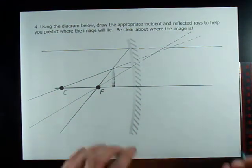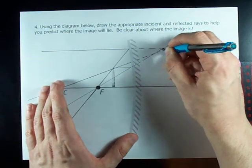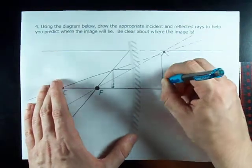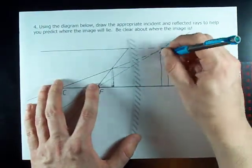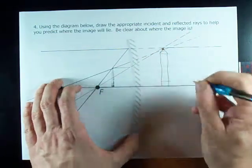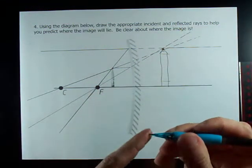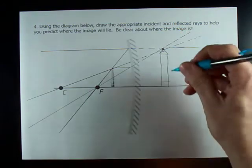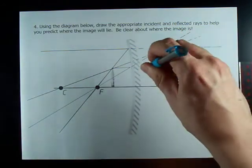Where do all three of my rays meet? The answer is right here. Tip of the pencil goes there. Bottom of the pencil goes to the principal axis. And here we go. We have the image. And it looks to me like the image is on the other side of the mirror. That means it's going to be virtual.